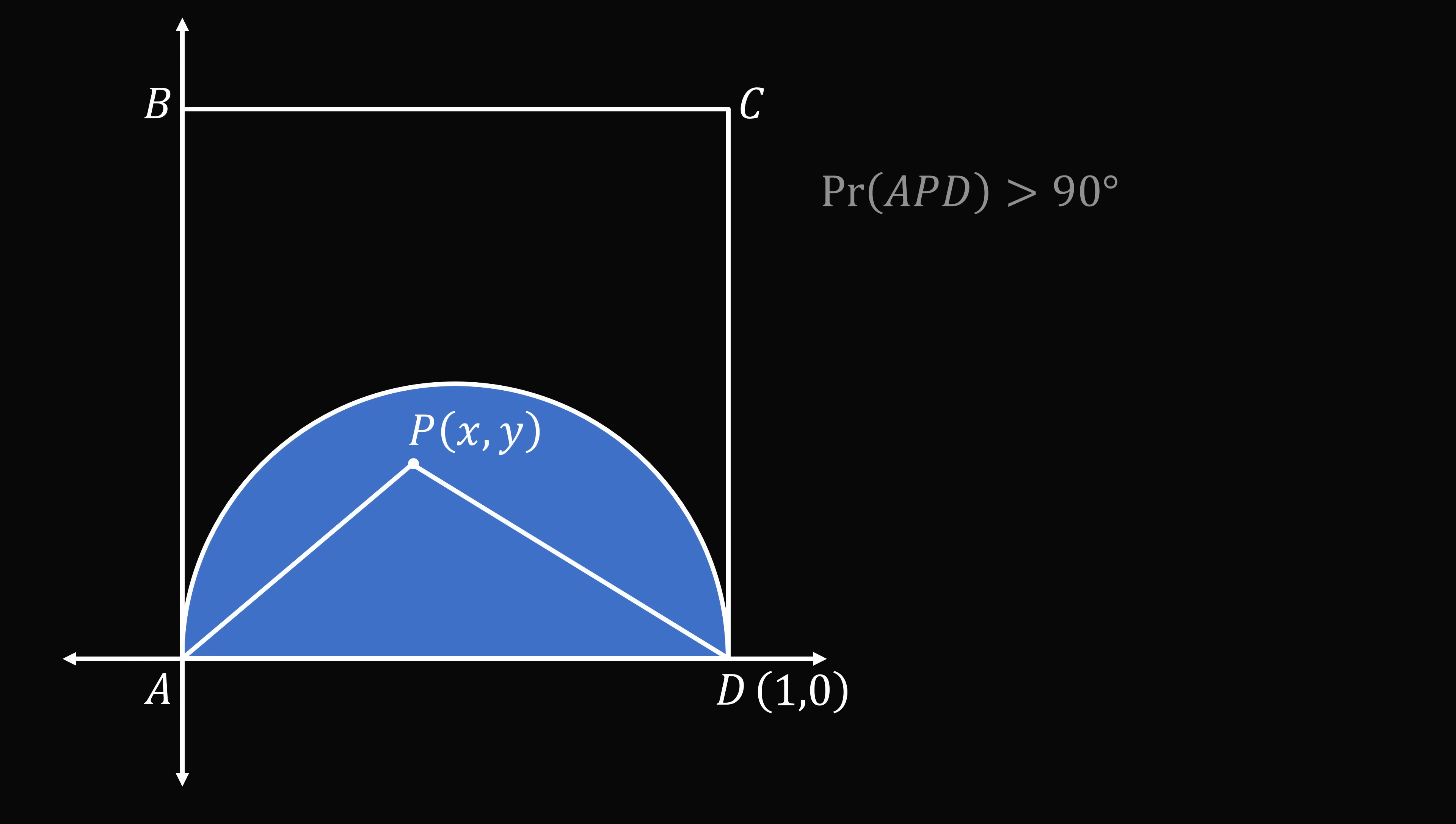So now once again, the probability of the angle is obtuse is equal to the area of the semicircle divided by the area of the square. This will be π times 0.5 squared divided by 2 all over 1. And this works out to be π over 8, which is approximately equal to 39.3%. And that's the answer.